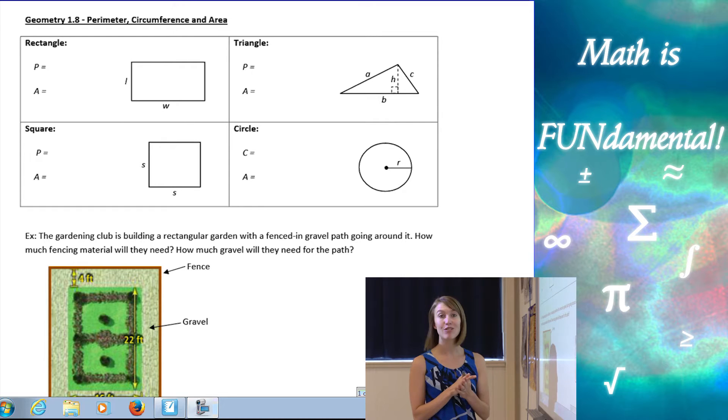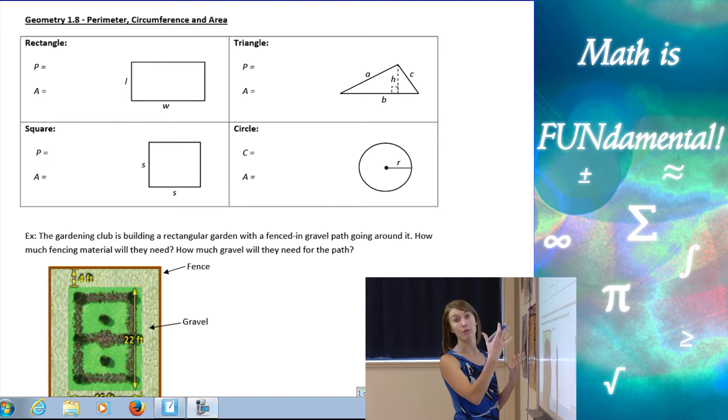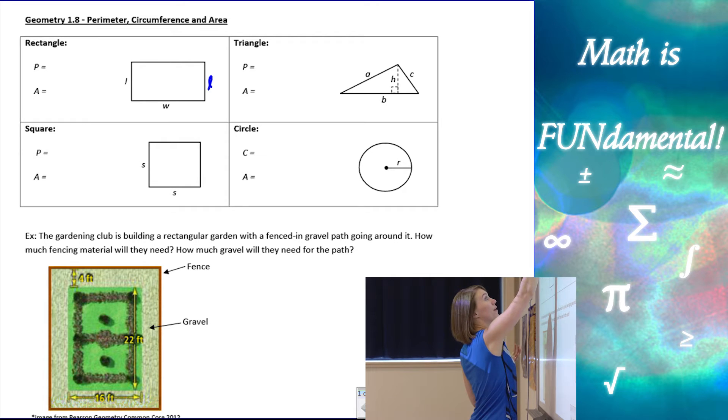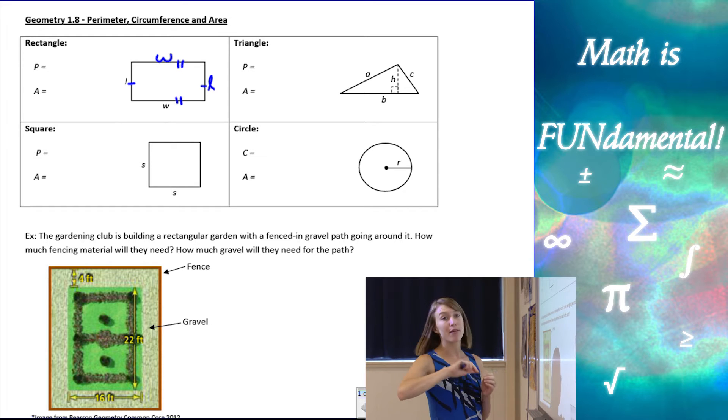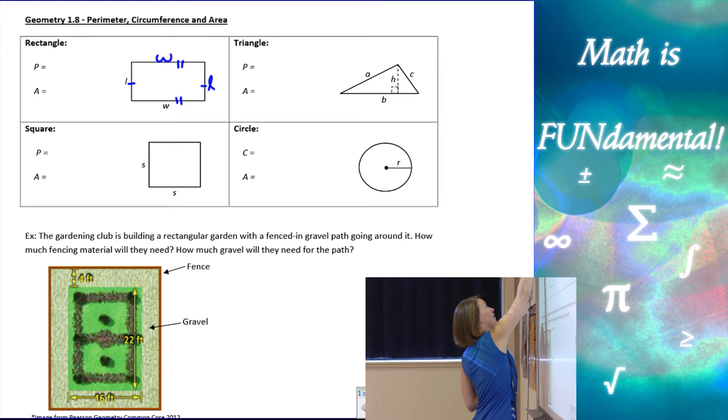We have a rectangle, triangle, square, and a circle that we're going to be looking at today. So rectangle, what perimeter means, perimeter is the length that goes all the way around your figure. If I have length and width, in a rectangle opposite sides are always congruent. If I want the perimeter, I'm just going to add all those parts together. So I'm going to have L plus L plus W plus W, or I can write that as 2L plus 2W.